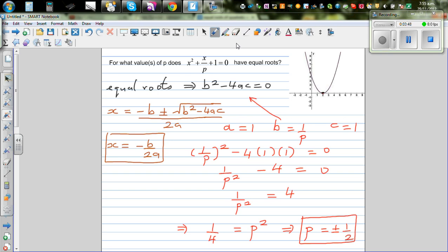So let us check whether the answer that we got is right or wrong. So if you put p as half, this equation will become x squared plus x over half plus 1 equal to 0. So simplifying this, this will become x squared plus 2x plus 1 equal to 0.